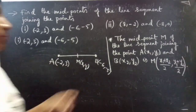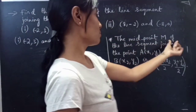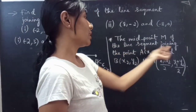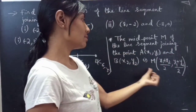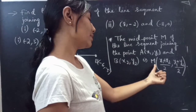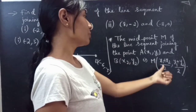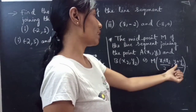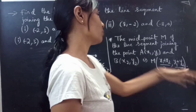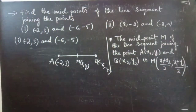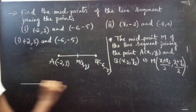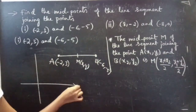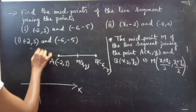So for this we will use the formula. The midpoint M of the line segment joining the points A and B is M equals X1 plus X2 by 2 and Y1 plus Y2 by 2. You can draw the line by considering 2 axes, X and Y.